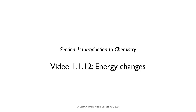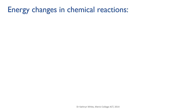In this video, we'll look at a change that accompanies all chemical reactions: a change in energy. One of the signs that a chemical reaction has taken place is that there is some kind of temperature change caused by the reaction. When a chemical reaction occurs, there's always a transfer of energy — either the reaction produces energy, or it absorbs energy from the surroundings.